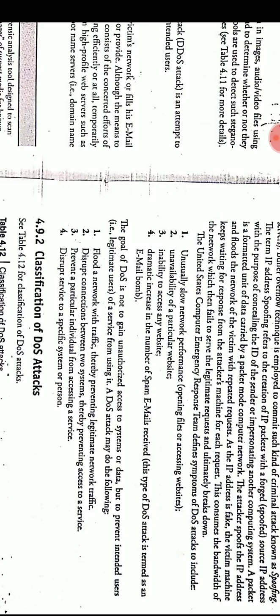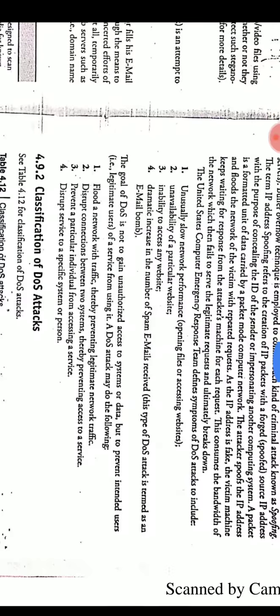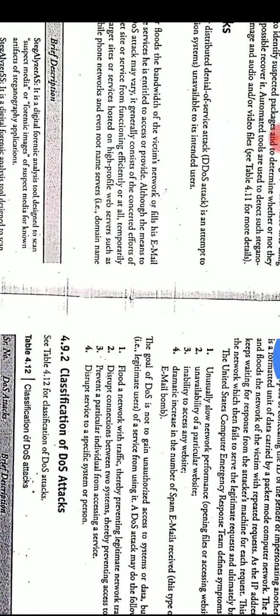The goal of DOS is not to gain unauthorized access like previous attack topics — it is not to gain access to a system. The main goal of DOS is to prevent users of a service from using it: by flooding a network with traffic, disturbing connections, preventing a particular individual from accessing a service, or disrupting service to a specific system. Points to write: introduction, classification, and these points.